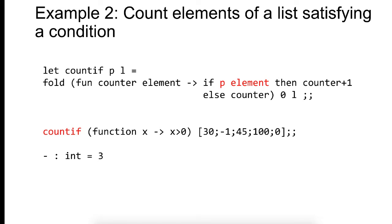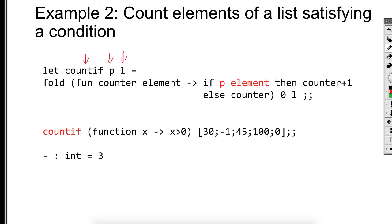The second example counts elements if they satisfy a condition. We call this function count_if, taking a predicate and a list. We use fold with a function that takes a counter and an element — if the element satisfies predicate P, we increment the counter; otherwise the counter stays the same. We send zero as the accumulator and the list to fold.